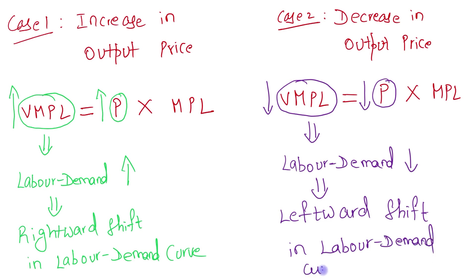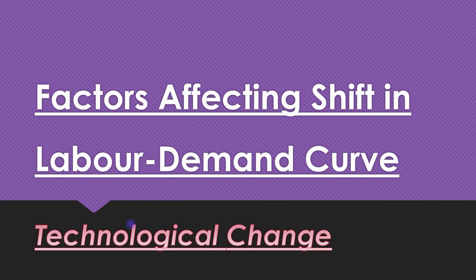So the first factor affecting the shift in labor demand curve is output price, with two cases: Case 1 is an increase in output price and Case 2 is a decrease in output price. The next factor that affects the labor demand curve is technological change.